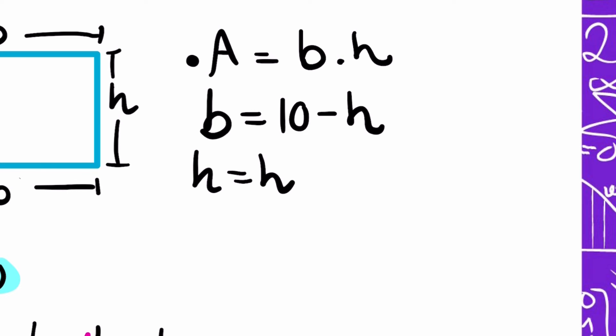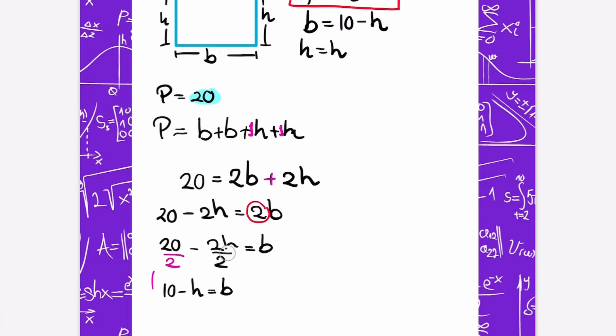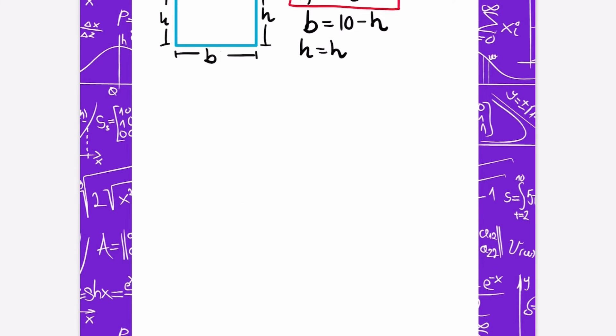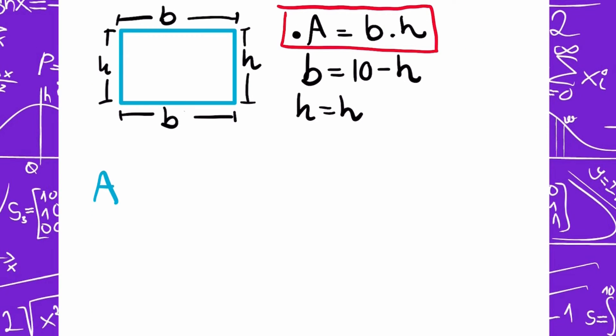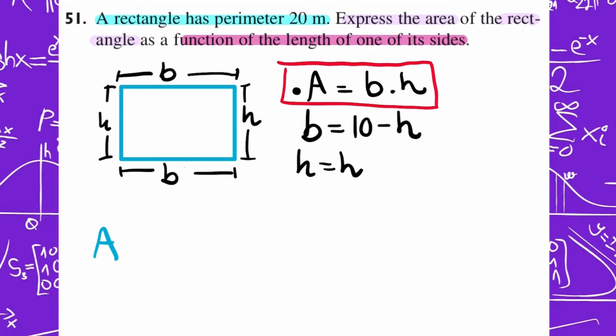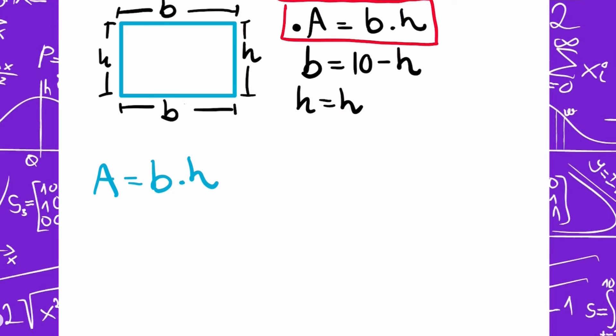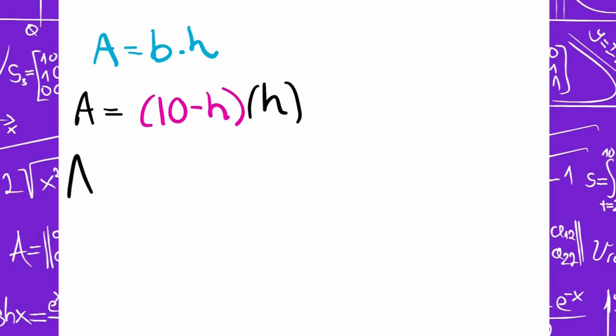I just need to replace in this formula so I only have one letter. In this case, I will only have the h, not the b. I know that the area is the one that they are asking me. The area of the rectangle is base multiply height. Area equals base, but I know that the base is 10 minus h. So, 10 minus h times h. Now, I just have to multiply the things that I have because I need to give my response in one line.